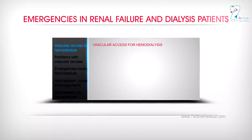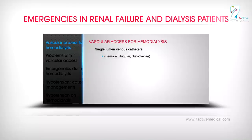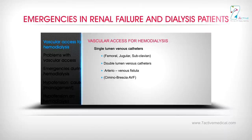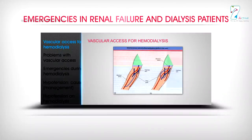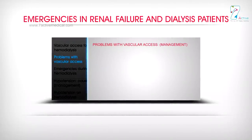Vascular access for hemodialysis includes: single lumen venous catheters (femoral, jugular, subclavian); double lumen venous catheters; arteriovenous fistula — Cimino-Brescia AVF; arteriovenous graft (synthetic or natural). Primary arteriovenous: radiocephalic fistula (cephalic vein to radial artery); arteriovenous PTFE grafts in the arm (brachial artery to cephalic vein).